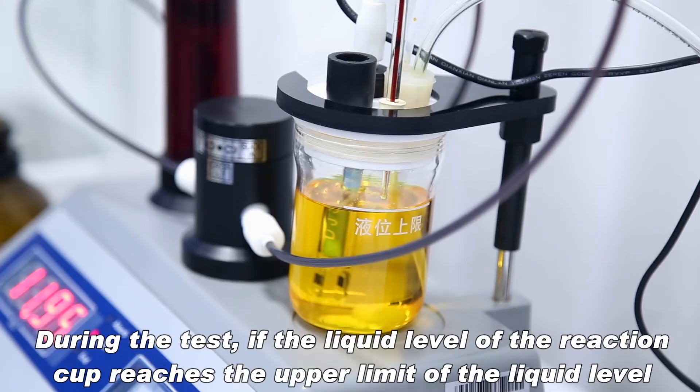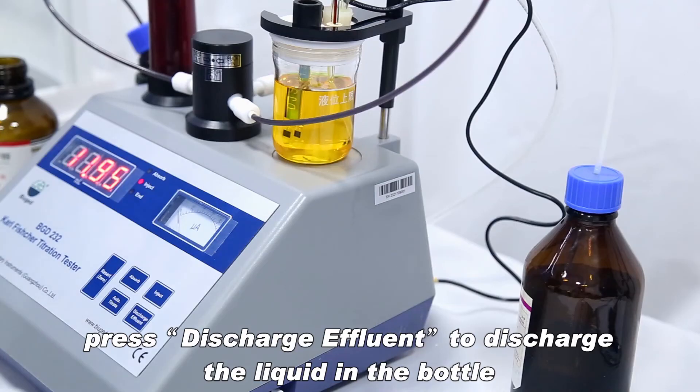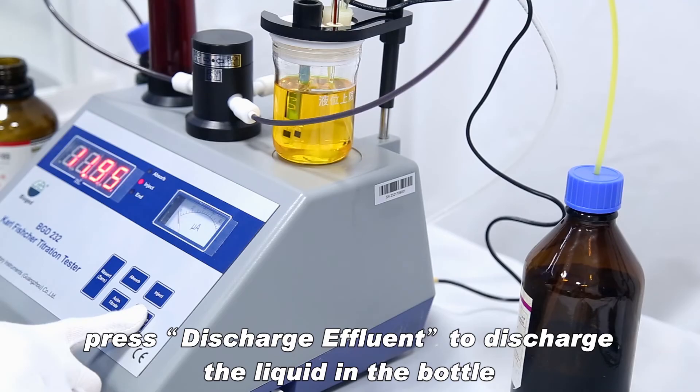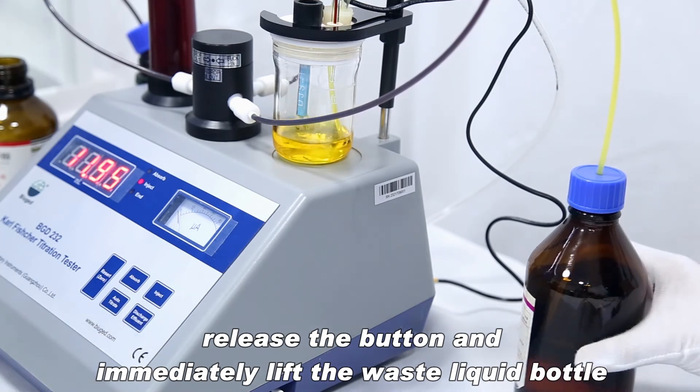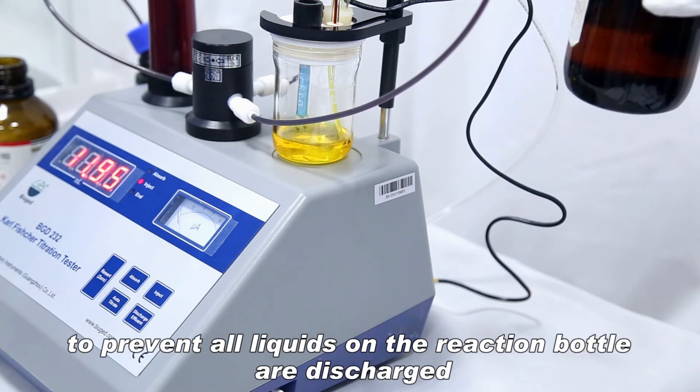During the test, if the liquid level of the reaction cup reaches the upper limit of the liquid level, press discharge effluent to discharge the liquid in the bottle until the liquid surface just has not passed the electrode metal sheet. Release the button and immediately lift the waste liquid bottle to prevent all liquids in the reaction bottle from discharging.